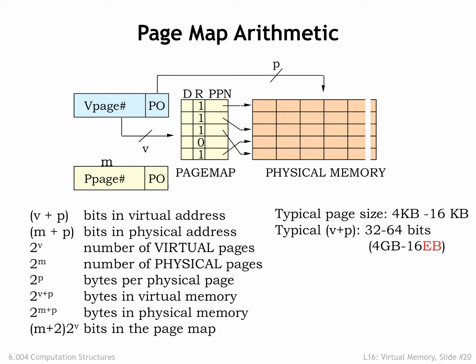The size of the virtual address is determined by the instruction set architecture. We're now making the transition from 32-bit architectures, which support a 4GB virtual address space, to 64-bit architectures, which support a 16-exabyte virtual address space. EXA is the SI prefix for 10 to the 18th. A 64-bit address can access a lot of memory.